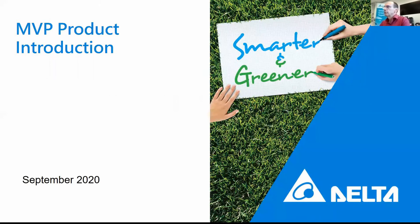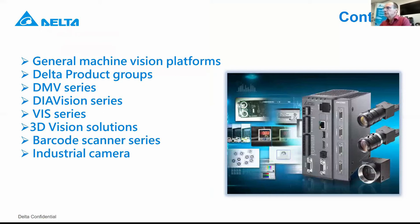First, the product introduction of our existing products and our new products. This presentation contains the following items. First of all, I will want to tell you something about our general machine vision platforms, what we see in the market. Then our Delta product groups, different kinds of products below each group, and then I zoom in to our products, what we have already and what we will get very soon, and to see what kind of possibilities we have for you.